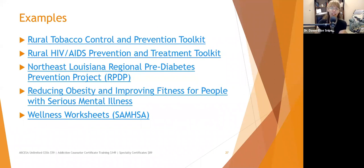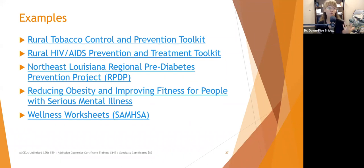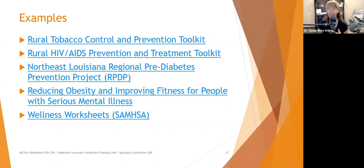Examples of prevention programs include rural tobacco control and prevention, rural HIV/AIDS prevention and treatment toolkits — both go to the financial aspect, as rural communities often lack resources to implement programs the same way as larger cities — the Northeast Louisiana Regional Pre-Diabetes Prevention Project, Reducing Obesity and Improving Fitness for People with Serious Mental Illness, and Wellness Worksheets by SAMHSA. These are all intervention tools and programs found to be very effective.